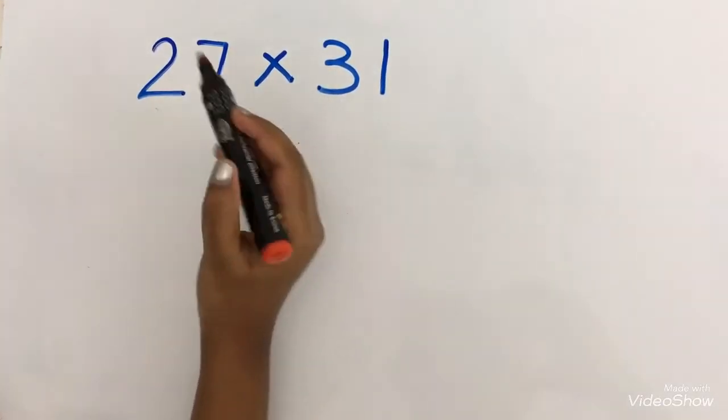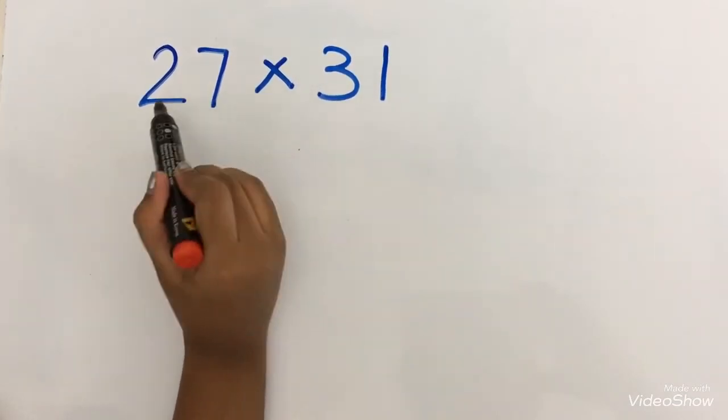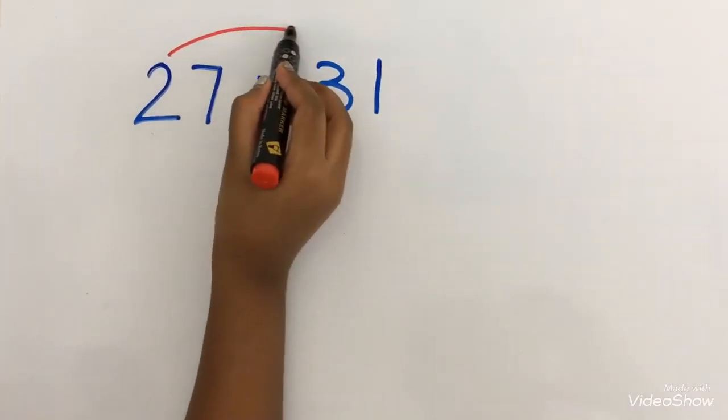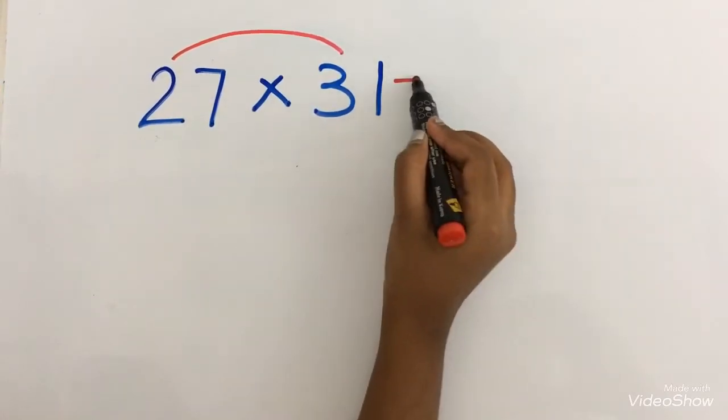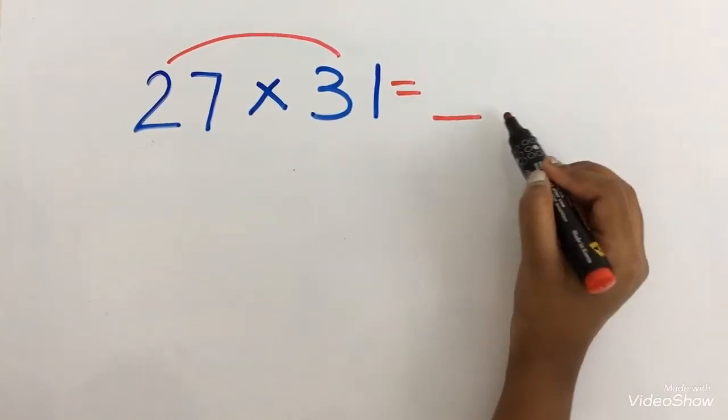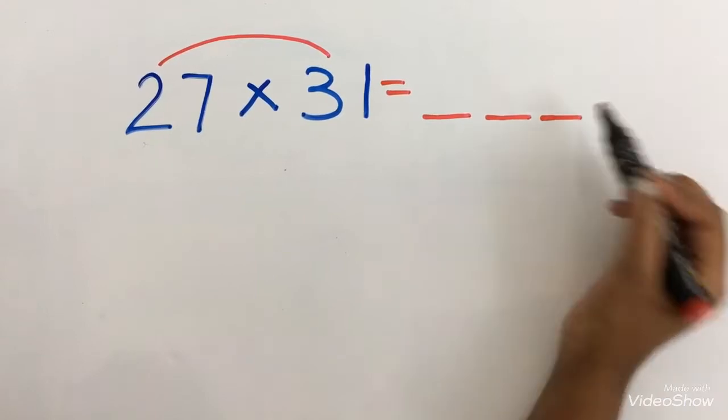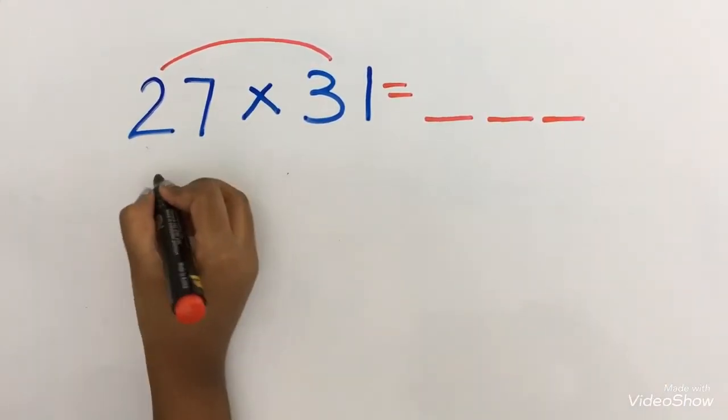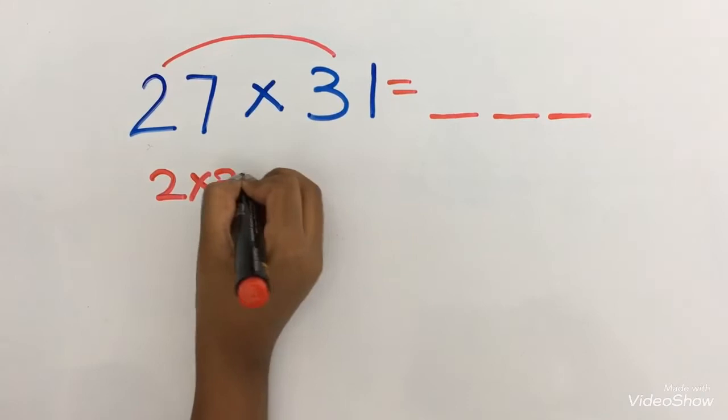In both numbers, I am going to multiply the first one, 2 and 3. I am going to take a three digit number. Now 2 into 3, 2 into 3 is 6.